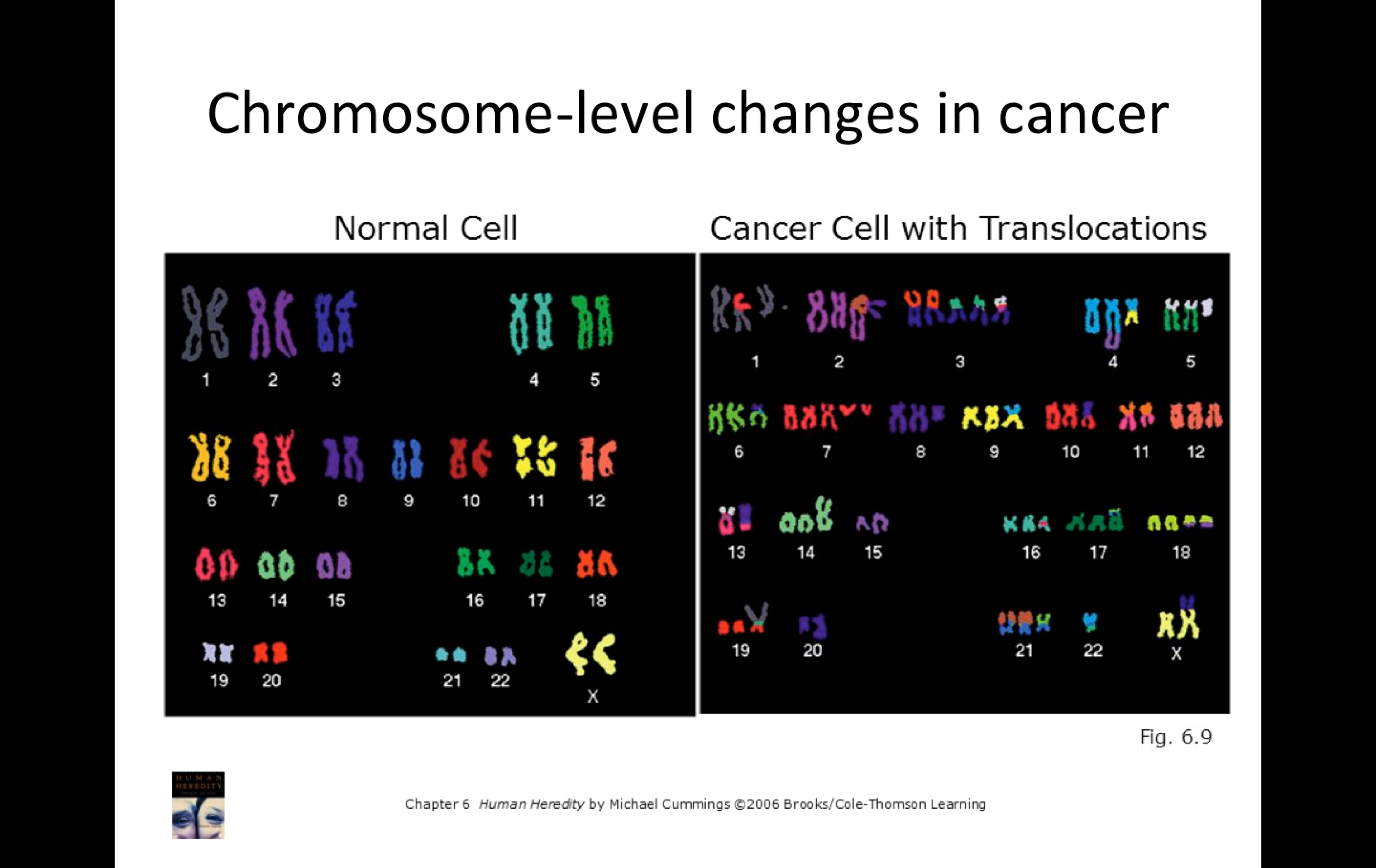And so when you look at cancer cells, you see this. So here we're looking at a normal cell, chromosome 1, 2, 3, 4, 5, 6, 7, 8. And we're using a technique called FISH here, fluorescent in-situ hybridization, which allows us to identify with different fluorescent colors the different genes, the different sequences on each of these chromosomes. So this is what it would look like in a normal healthy cell.